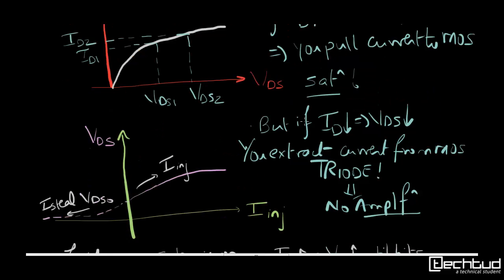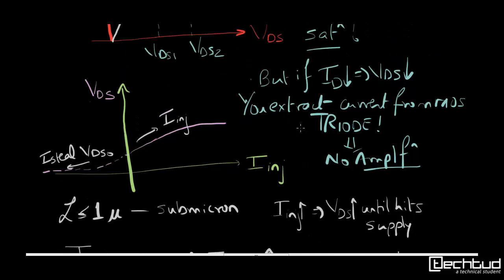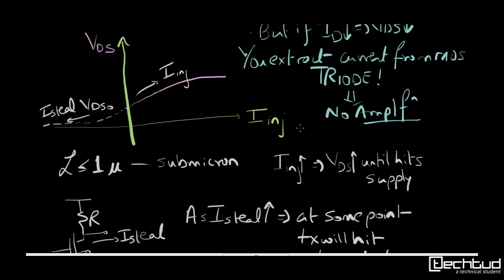One thing to remember is that this square law equation is valid for length greater than equal to 1 micrometer, and for less than 1 micrometer we need to include short channel effects.